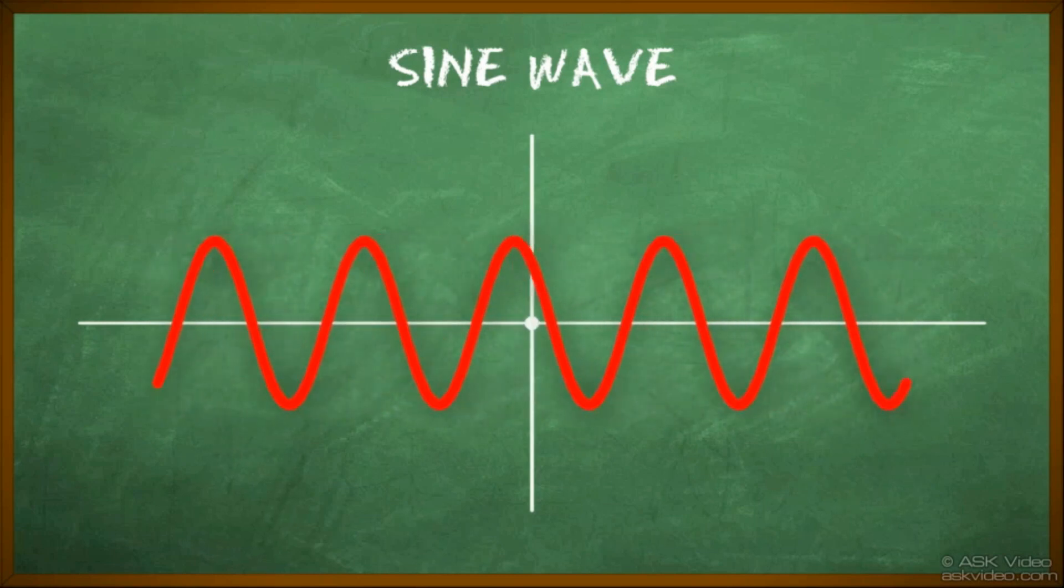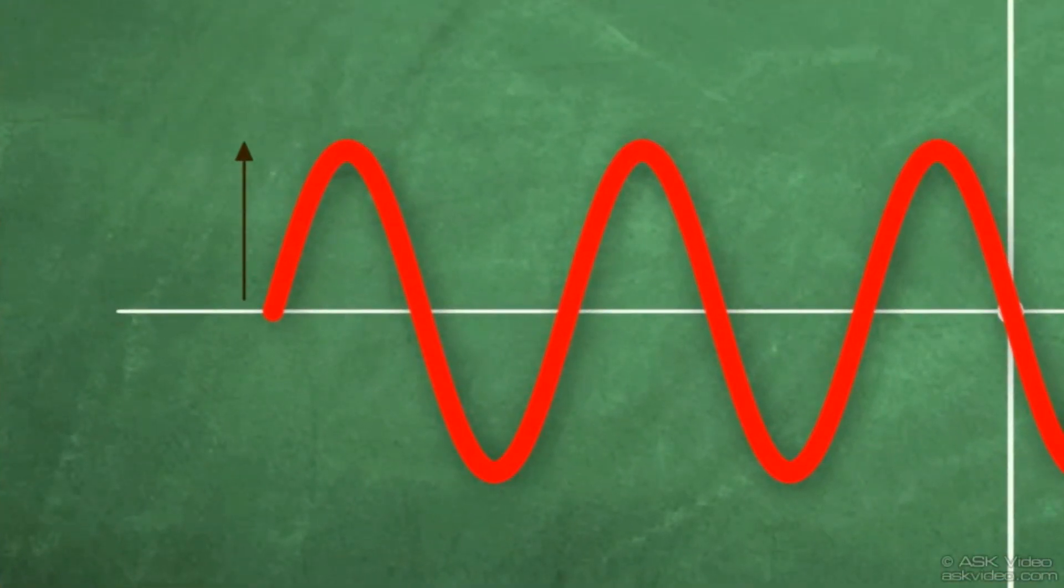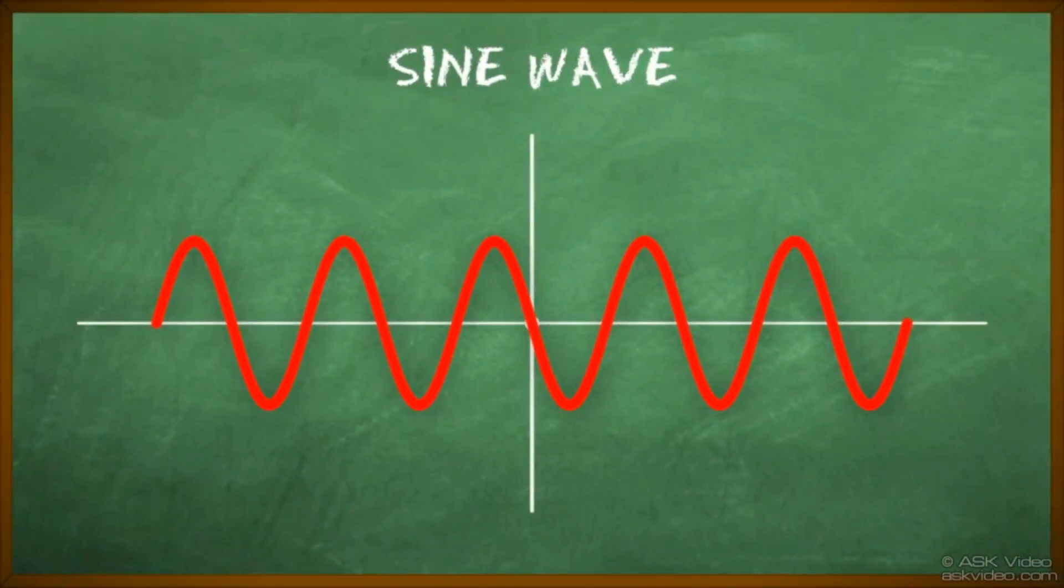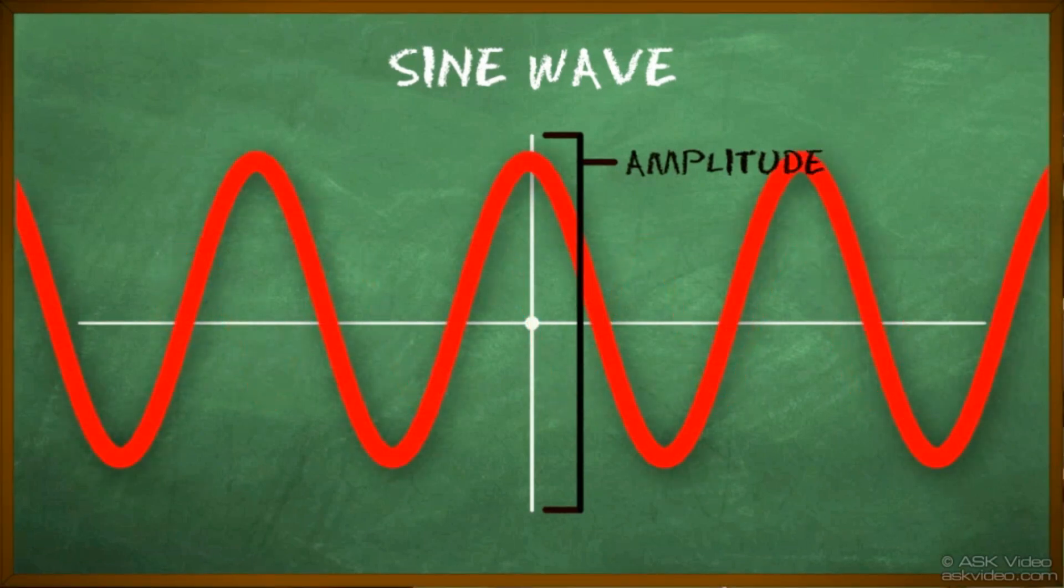You can see that the wave starts with a positive motion and then an equal negative motion. The vertical axis represents amplitude, or you could call it the volume level. The higher the peak of the wave, the more volume it represents.